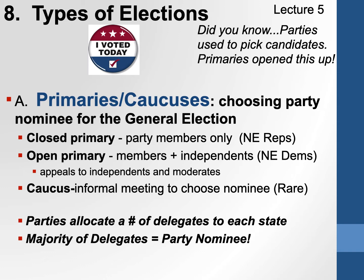So, primaries and caucuses — we're on page 134. There are two types of ways in which a state can help choose their nominee, and even within states, parties can choose the nominee. Parties are free to do what they want, and state parties can choose how they want to express their preference for their candidate for the general election — who should the nominee be.